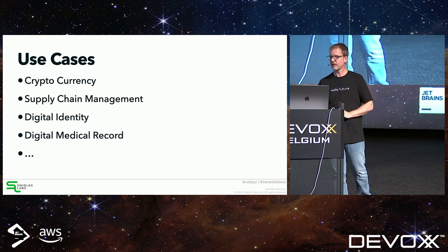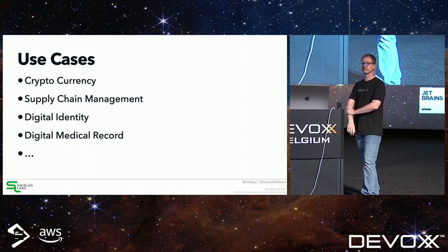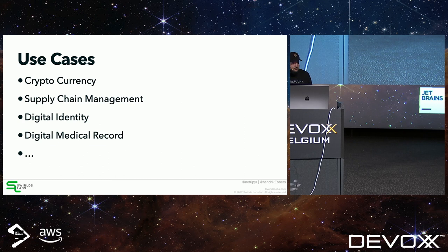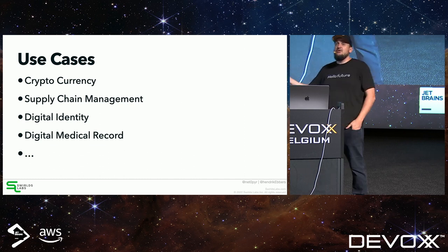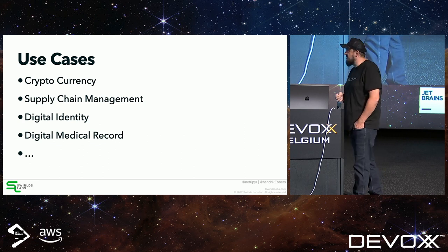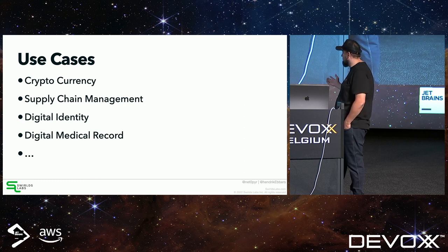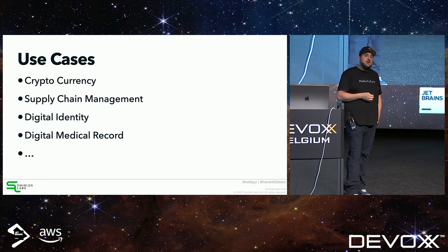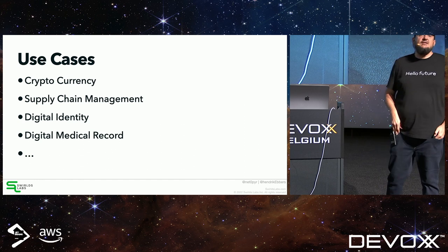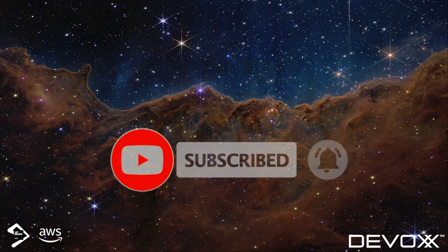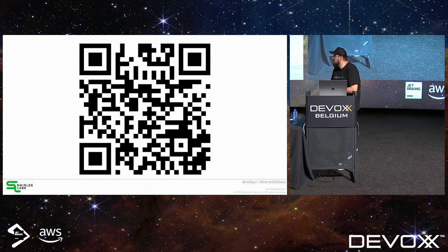That's about one hour of content — we'll take a 10-minute break now. After the break we'll cover smart contracts, learn a new programming language to create them, and see how to execute them on a public ledger.